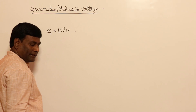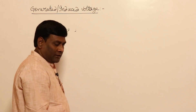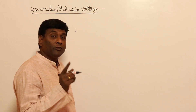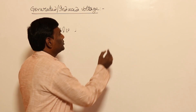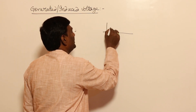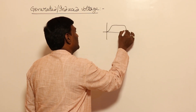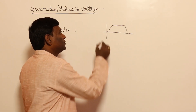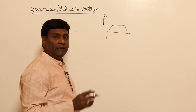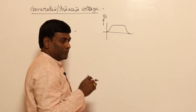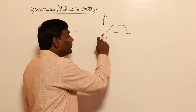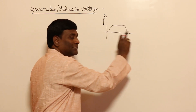Now, for example, in a DC machine, what is the flux density waveform? The flux density waveform is flat-topped. So my flux density waveform is going to be flat-topped like this. In our exam or in our problems, they cannot give an equation for this.